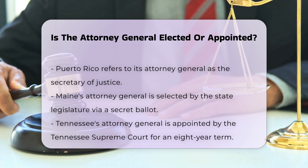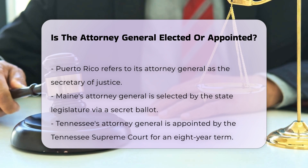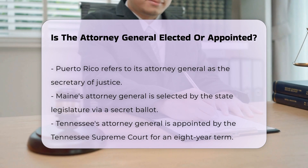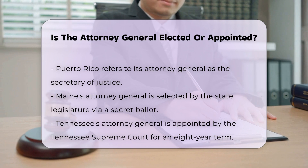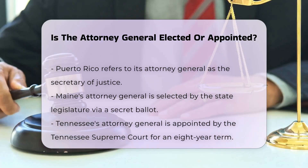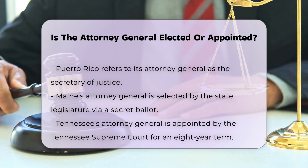Selected by the legislature. In Maine, the Attorney General is selected through a secret ballot by the state legislature. This unique method sets Maine apart from other states and territories. Tennessee has another distinct method where the Attorney General is appointed by the Tennessee Supreme Court for an eight-year term. This long-term appointment reflects the significant role the Attorney General plays in the state's legal system.